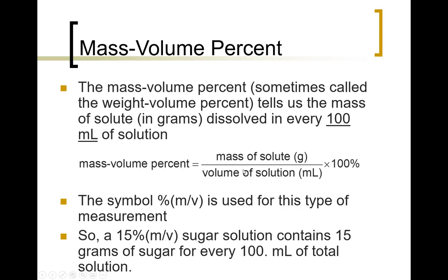Okay, so the denominator is different. And so we use the symbol percent m over v for that. So if I see 15 percent m over v sugar solution, the way I read that is there are 15 grams of sugar for every 100 milliliters of solution.